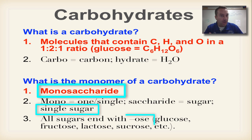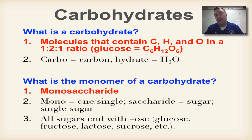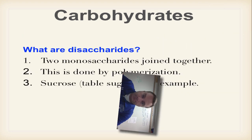All sugars end in O-S-E. Think of glucose, which is cell sugar; fructose, fruit sugar; lactose, milk sugar; and sucrose, which is table sugar — the kind used to make Kool-Aid.